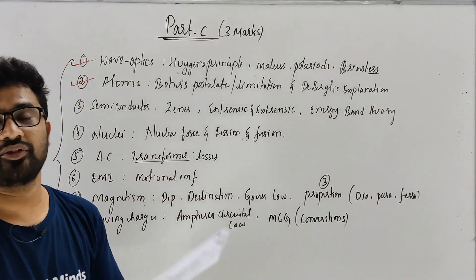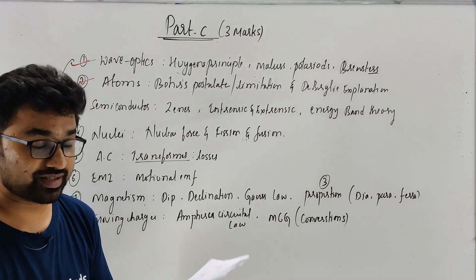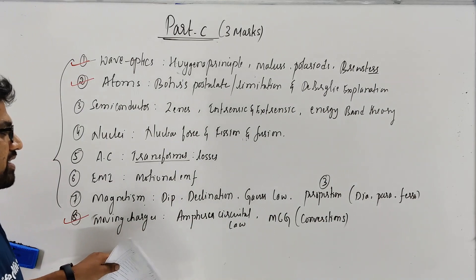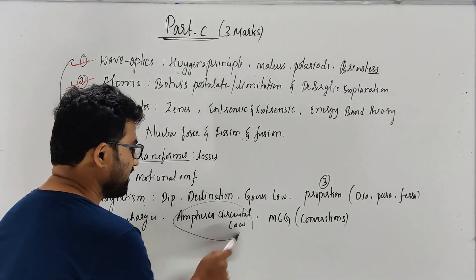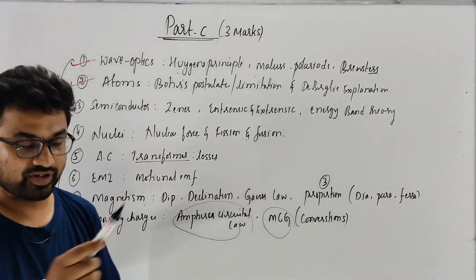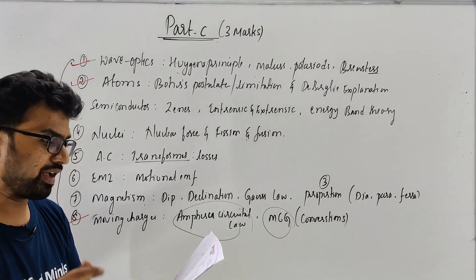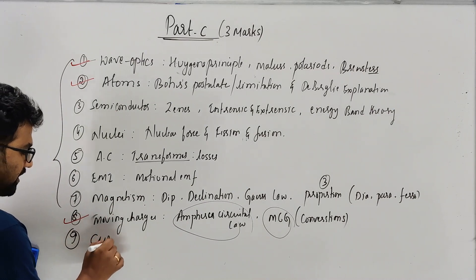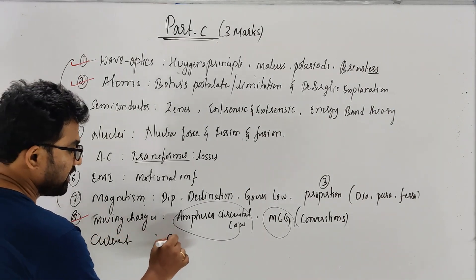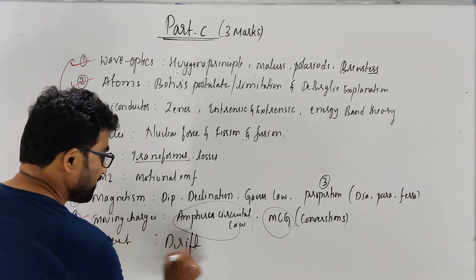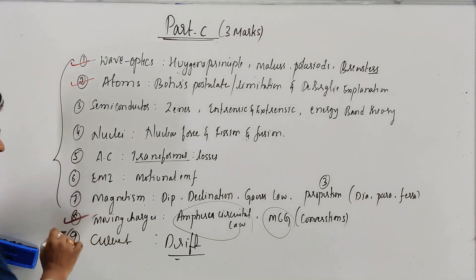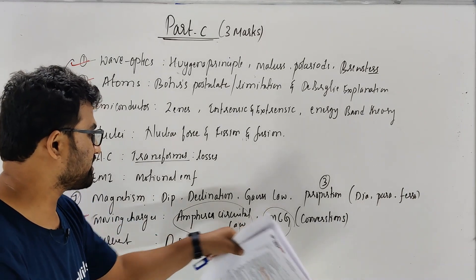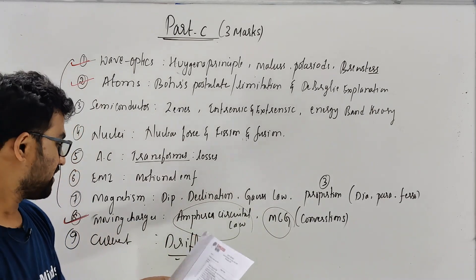You can cover two markers, even you can cover five markers or three markers. But what I say is this addition. Moving charges usually use ampere circuit. If you have to study this, it is called MCG conversion. This bit is on the other side. You can also use drift velocity.